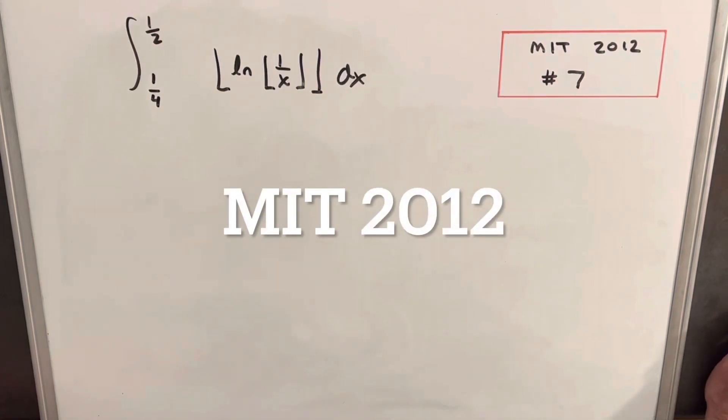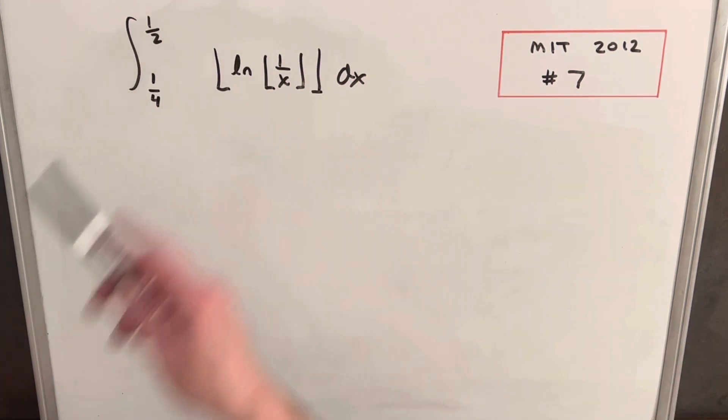Hey, we have an interesting integral here today from MIT Integration B 2012. This was problem number seven. We're integrating from one-fourth to one-half. We have the floor function of natural log of the floor function one over x dx.